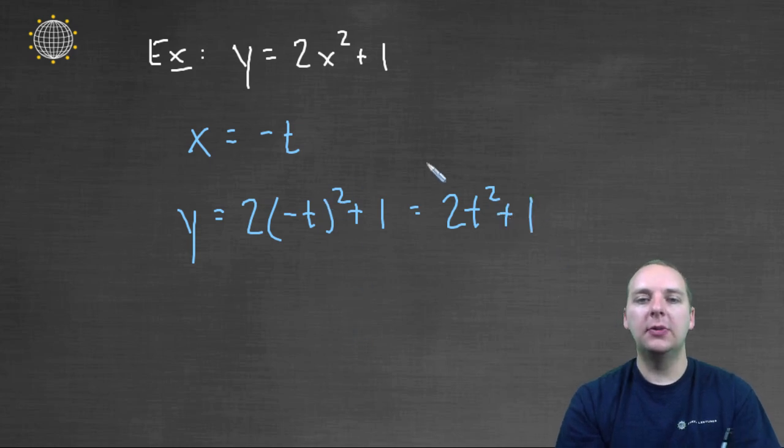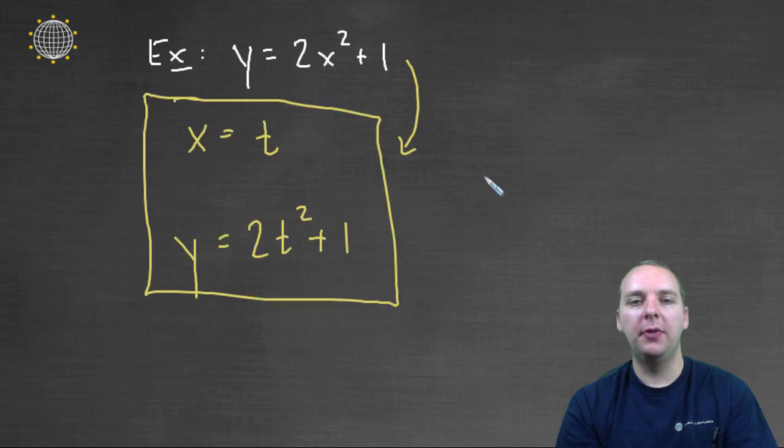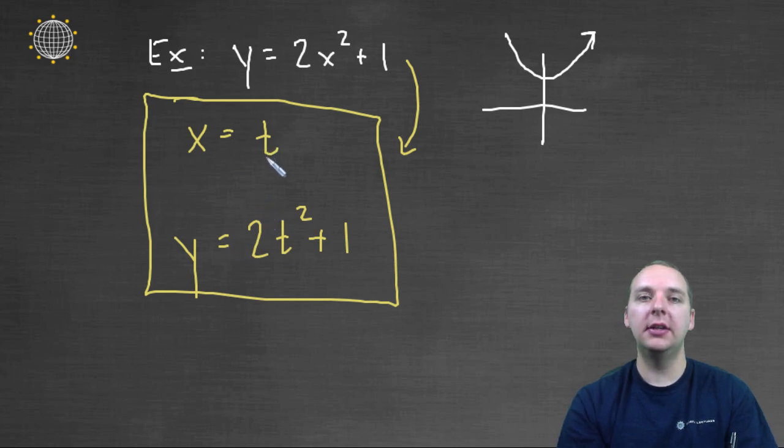Alright, so let's think about this one for a minute. Alright, and actually let me go back to the very first parametrization I did first. This graph, y equals 2x squared plus 1, is a parabola that looks something roughly like this, right? And you notice, based off of this parametrization,